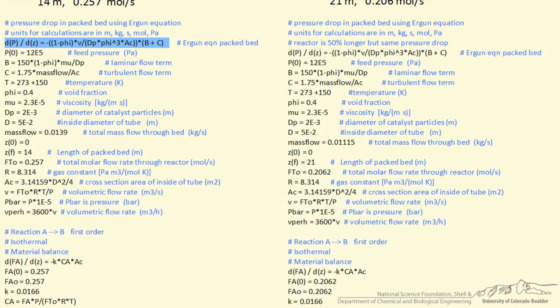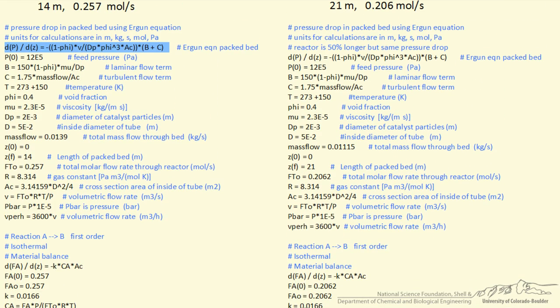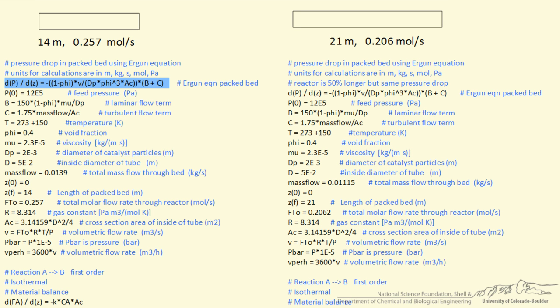Well what we want to do is compare it now when the reactor is 50% longer. However, we make the reactor 50% longer, we have to change other things, and so most importantly, we have to decrease the feed rate in order to have the same pressure drop for this longer reactor. Just by solving the POLYMATH equation for a few conditions, I determine this is the feed rate of A that will give us the same outlet pressure as for our 14 meter reactor.